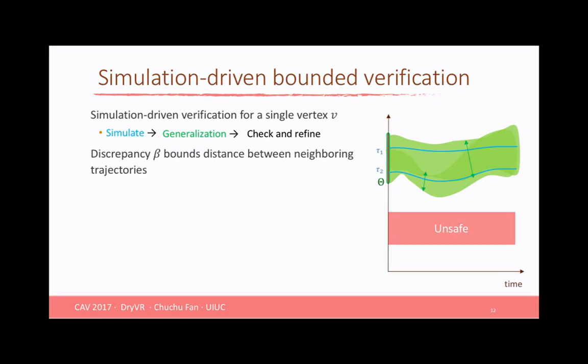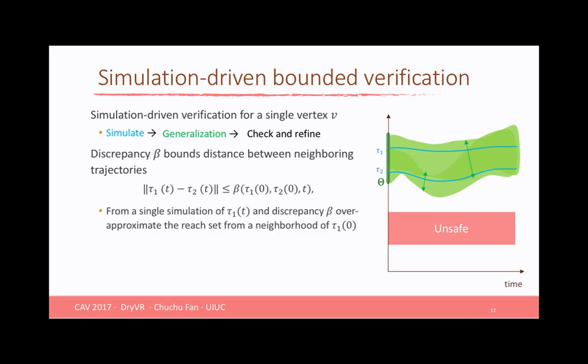We are going to use this concept called discrepancy function. Discrepancy function bounds the distance between two neighboring trajectories using a function of only its initial state and time. So given a single simulation trajectory, if at any time t we can bloat the simulation trajectory using the value of discrepancy function, we are going to get this tube that over-approximates the reach set from a neighborhood of tau_1, that's a single simulation trajectory, a neighborhood of tau_1(0). Tau_1(0) is the initial state of tau_1 at time 0.